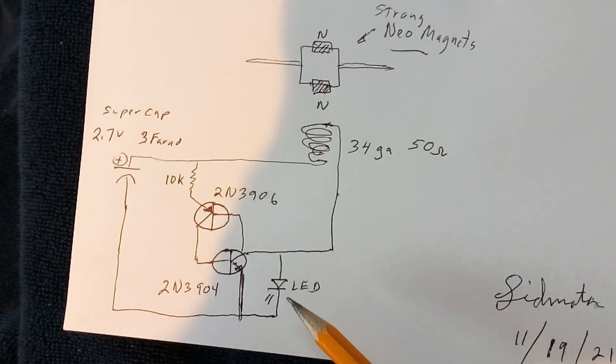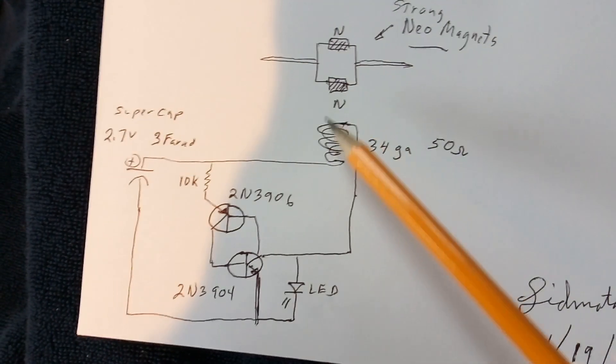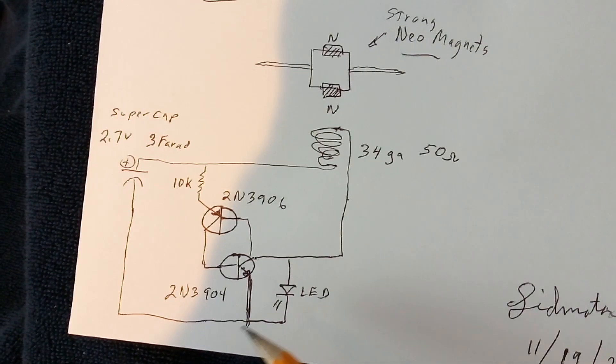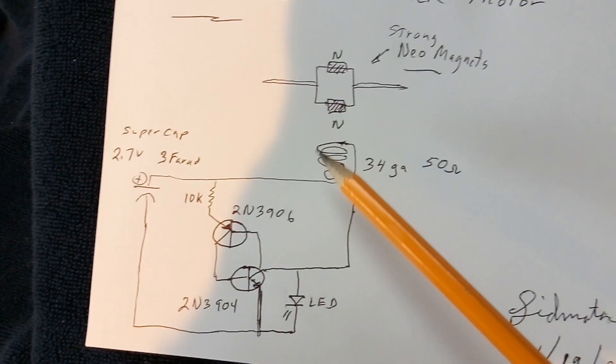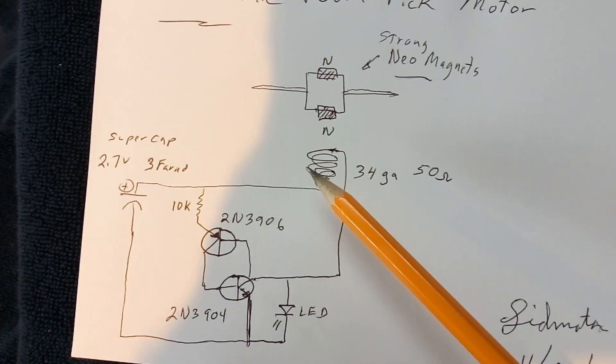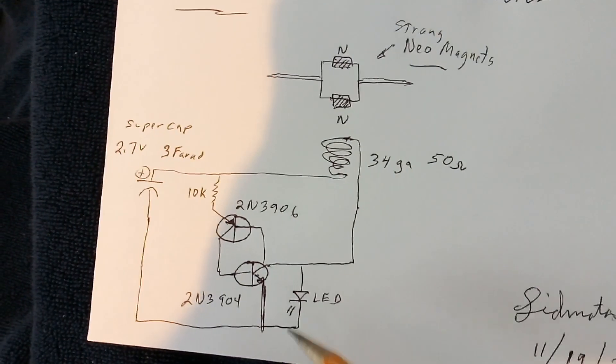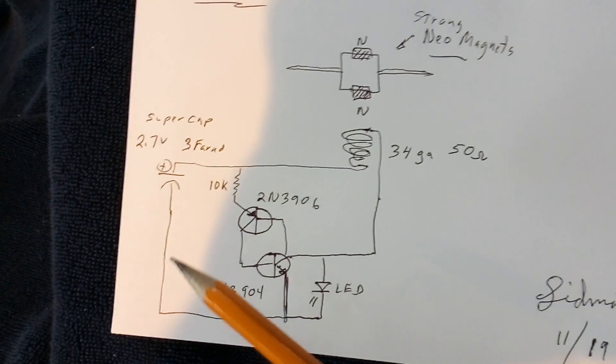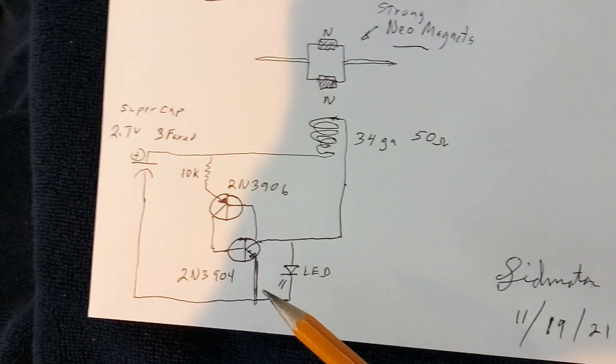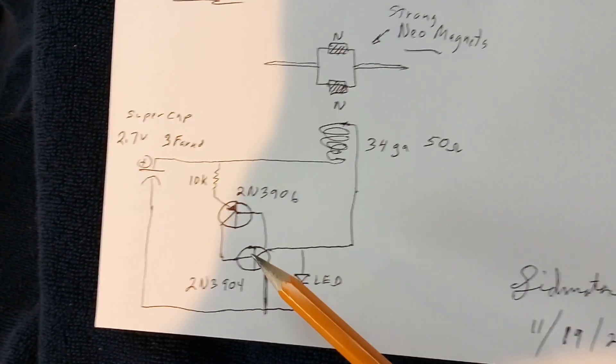On the LED, the flyback diode, instead of going across the coil, I'm taking it down to ground here. If I do it this way, it goes into self-oscillation which I can't use, so I put it this way. I think this is drawn right, but if not, call me on it and I'll change it in the description.